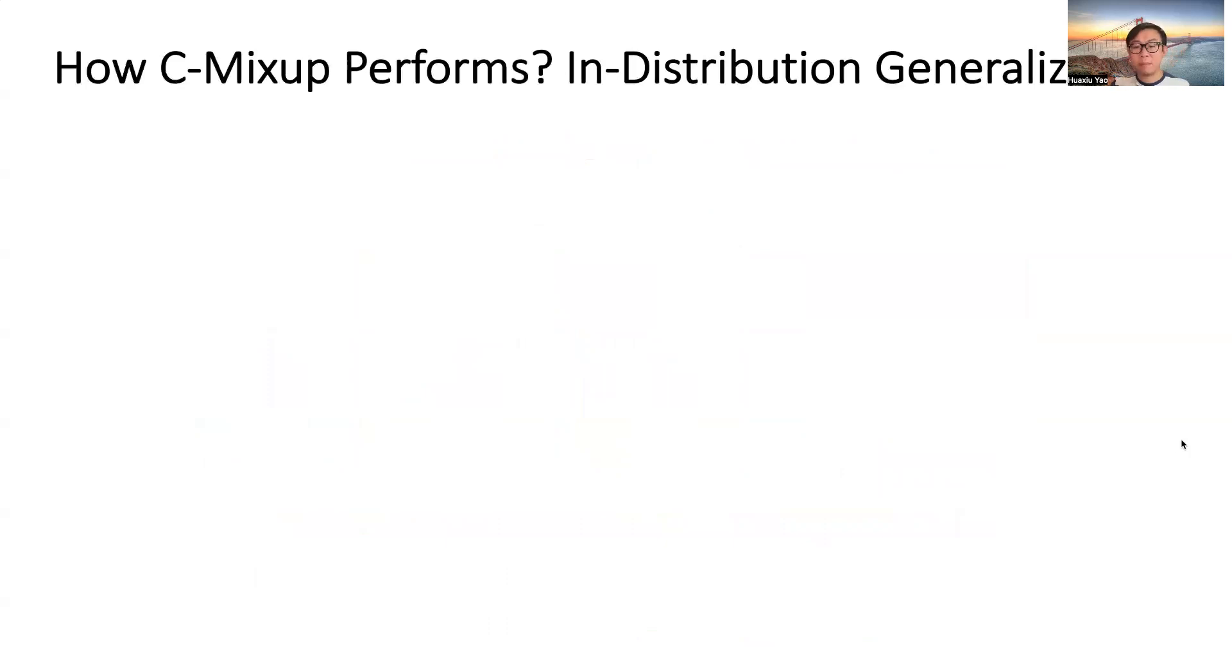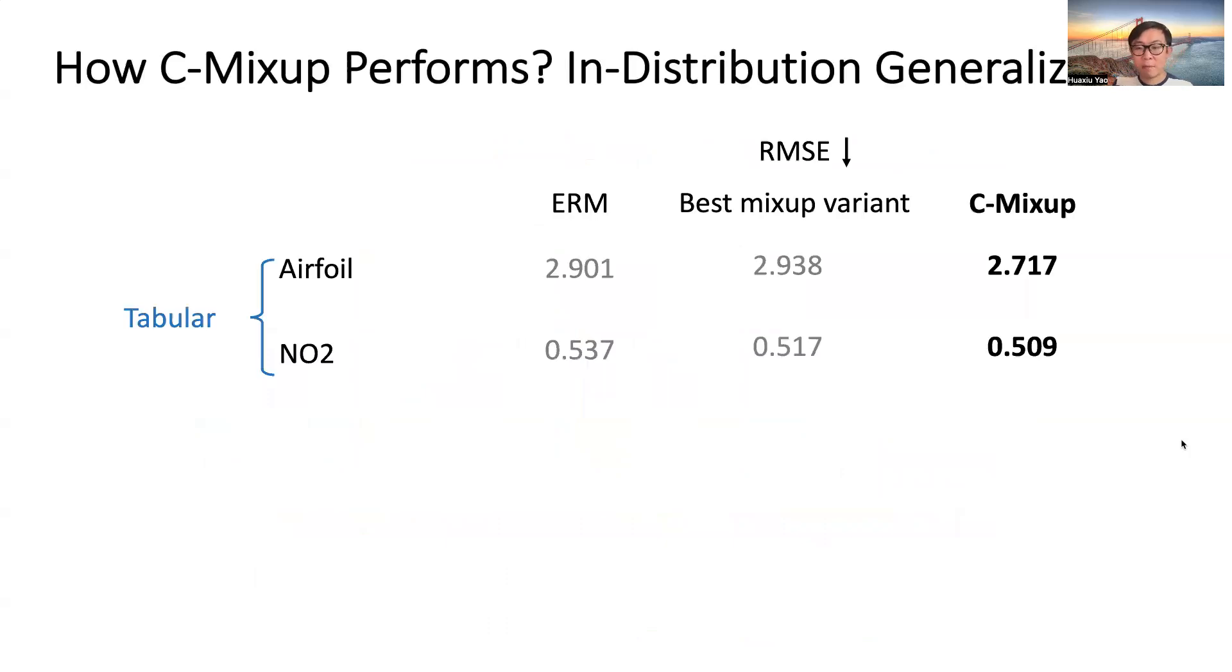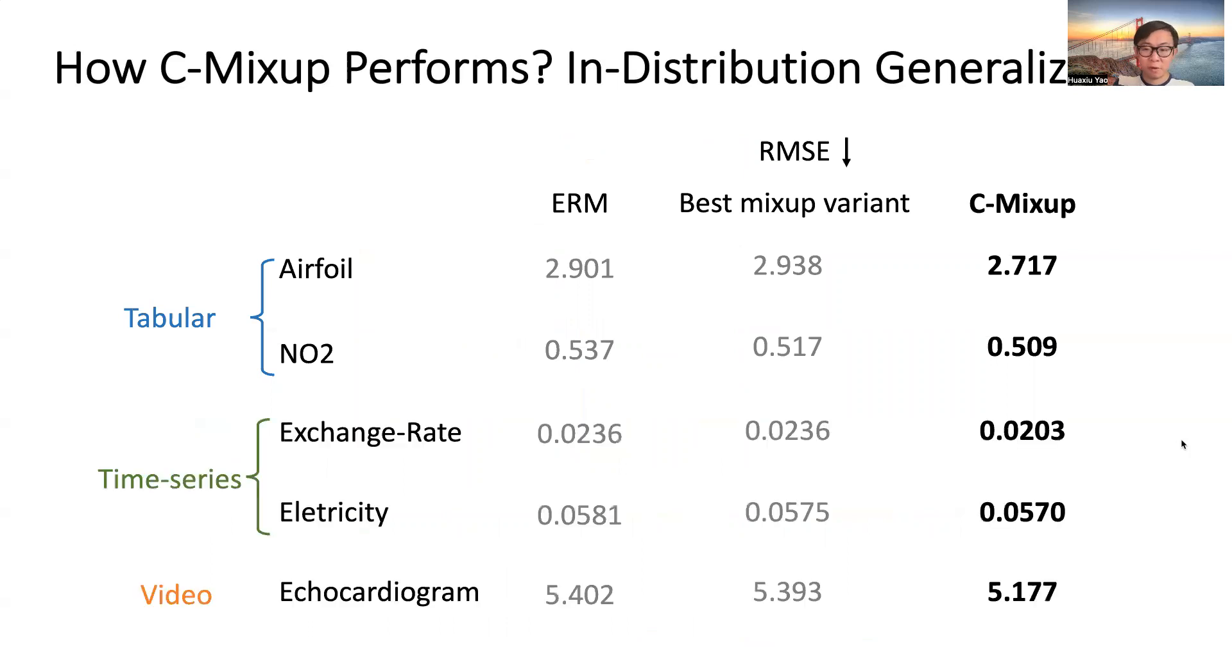Empirically, C-Mixup outperforms ERM and the best Mixup variants in tabular, time series, and video datasets.